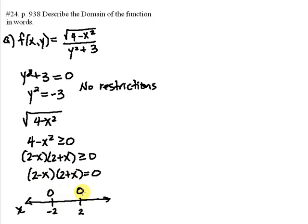Checking a value between negative 2 and 2, like the value zero, we see that we get 2 minus zero times 2 plus zero is 4, which is a positive. Similarly, checking values to the left of negative 2 and to the right of 2, we're going to get negative values.